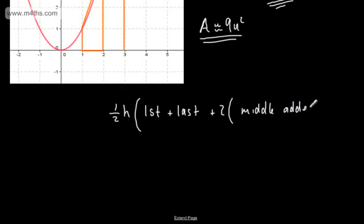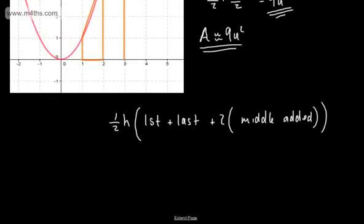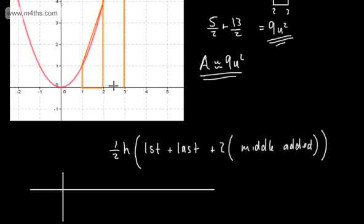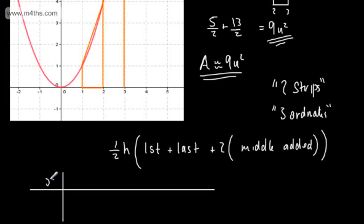Going back to our curve, the trapezium rule can be expressed as: one-half times h — the difference in x-coordinates — times the first ordinate plus the last, plus two lots of everything left in the middle. Let me draw up a table. For two strips, we have three ordinates: at x equals 1 we get y equals 1; at x equals 2, y equals 4; at x equals 3, y equals 9. If we have n strips, we have n plus one ordinates.